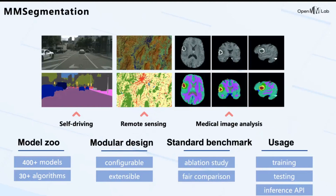MMSegmentation is the most widely adopted segmentation toolbox in recent years. It can be applied to general scene understanding, self-driving, remote sensing, and medical image analysis. It incorporates over 30 algorithms and releases more than 400 models with lots of ablation studies. We provide a standard benchmark with fair comparison.